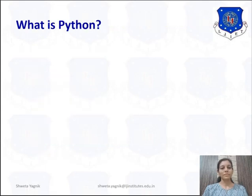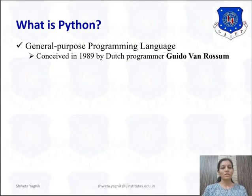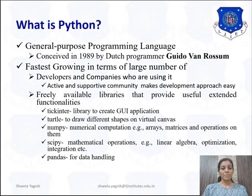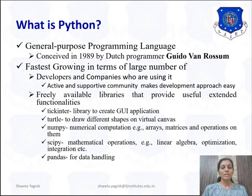Let's begin with what is Python. It is a general purpose programming language conceived in 1989 by a Dutch programmer Guido van Rossum. The reason for its fastest growing depends on the developers and companies using it. The active and supportive community makes the development approach very easy. Secondly, freely available libraries provide useful extended functionalities. Libraries like Tkinter are used to create GUI applications, and Turtle is used to draw different shapes like rectangle, square, triangle, and more on a virtual canvas.